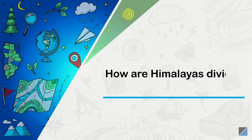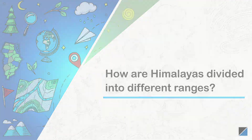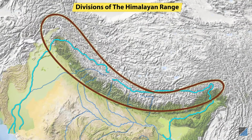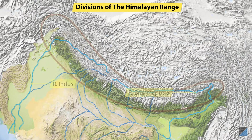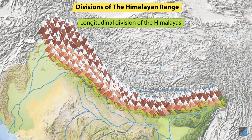How are Himalayas divided into different ranges? The Himalayan mountain range runs in a west-east direction from the Indus River Valley to the Brahmaputra River Valley. Longitudinally, the Himalayas are divided into three distinct ranges that run parallel to each other.